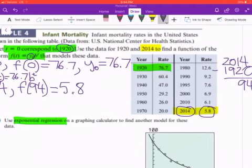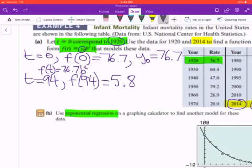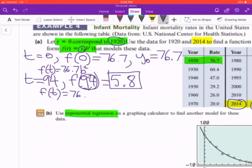So what we're going to do is substitute those two numerical values, this one for the exponent for t, 94, and then this one is going to be the input. So instead of f of t, I'm going to rewrite it here. f of t is equal, so far we have this, 76.7b to the power t, and so what I'm going to do is replace f of t with 5.8, and then I'm going to replace the exponent with a 94.